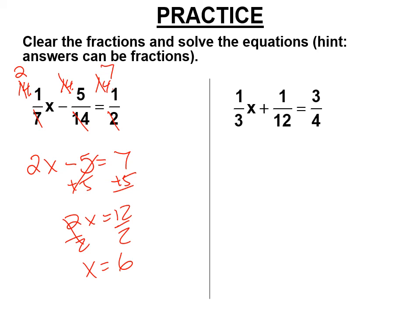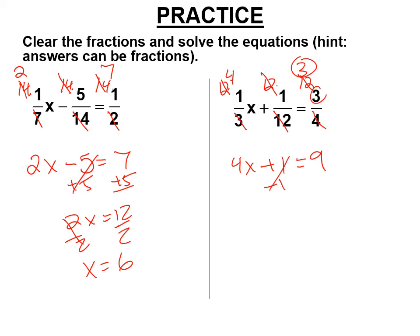In this one, multiply both entire sides by 12. 3 cancels the 12 and it becomes a 4. The 12s cancel. 4 cancels the 12 and it becomes a 3. So we get 4x plus 1 equals 3 times 3, which is 9. Subtract 1 from both sides. Most of these are going to come out as fractions, but these are all coming out very nicely.